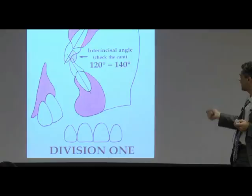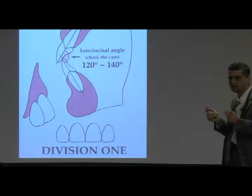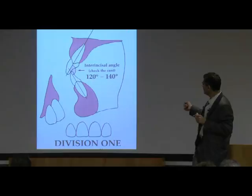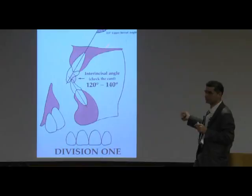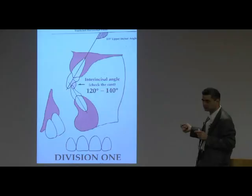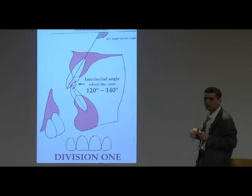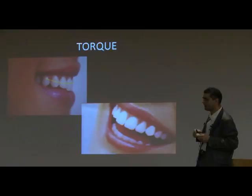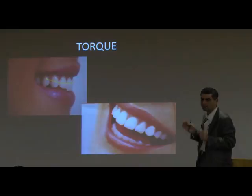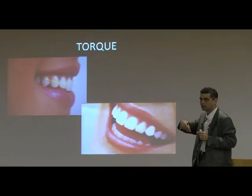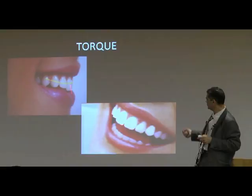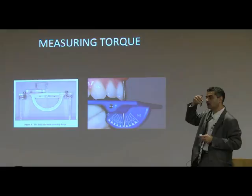Most of you are used to Truitt's classification, so we'll use that. He uses the angle of the upper incisor to Frankfurt horizontal. In an ideal division 1, you would have 115 degrees as your incisor angle, which means the upper to lower would be roughly 130 to 135. The most common malocclusion in the UK is division 2 on a skeletal 2 base — meaning the upper incisors are actually upright or retroclined.